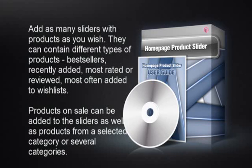Add as many sliders with products as you wish. They can contain different types of products: best sellers, recently added, most rated or reviewed, most often added to wish lists. Products on sale can be added to the sliders, as well as products from a selected category or several categories.